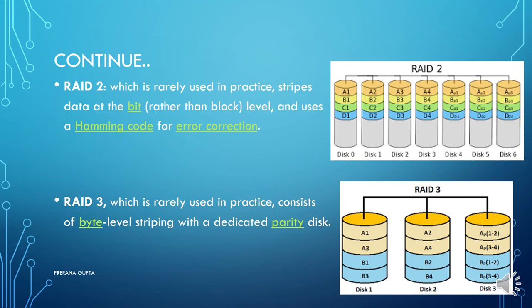RAID 2 is not used in practice. It stripes data at the bit level — block A is distributed bit by bit across disks as A1, A2, A3, A4 on different disks, with parity kept on another disk. In case of failure, Hamming code and error correction methods can recover the data.